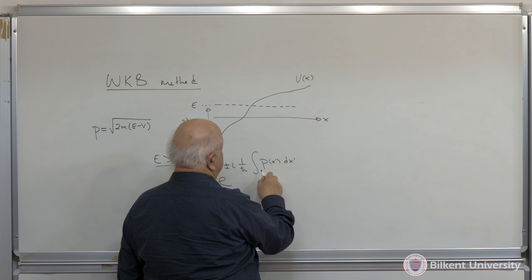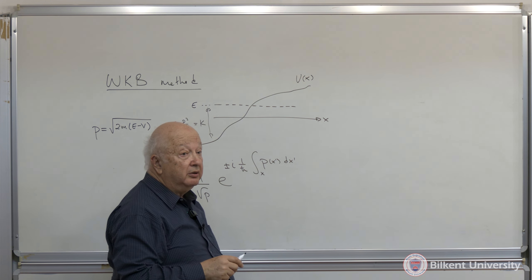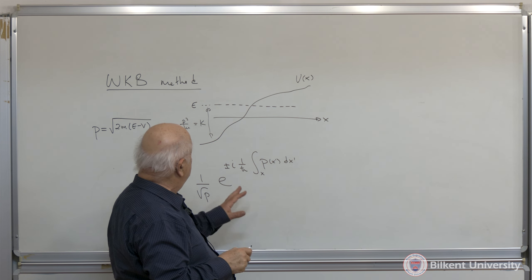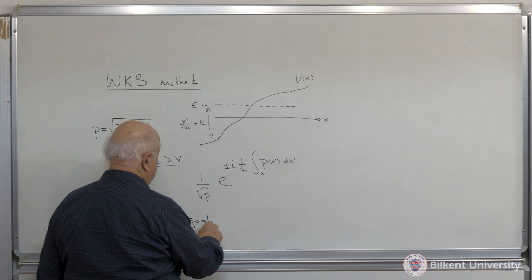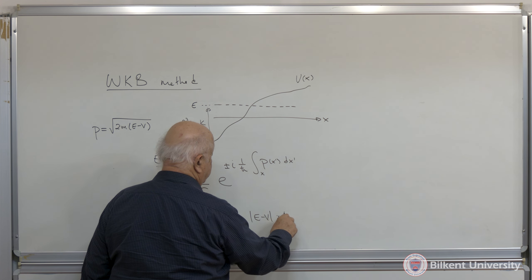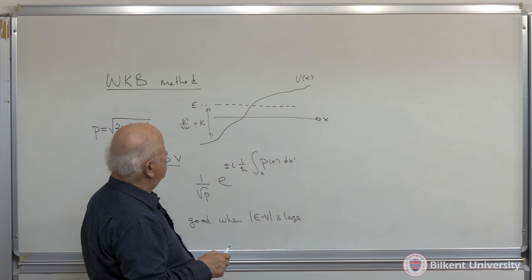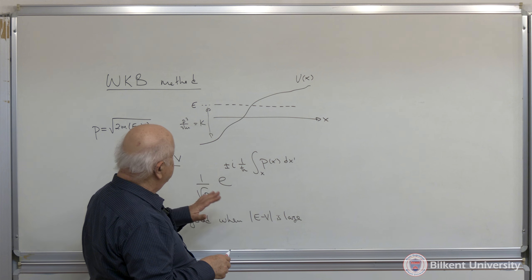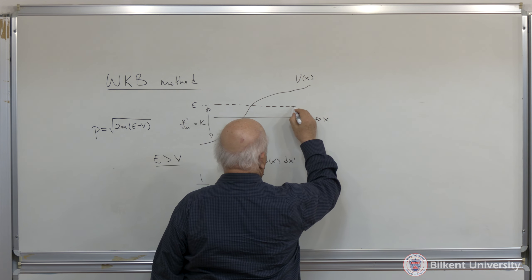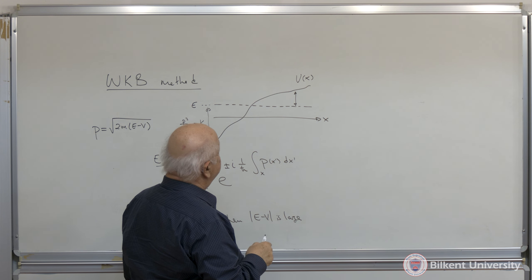We had e to the plus or minus i times 1 over h-bar times the integral of P of x-prime dx-prime, because V is changing as a function of x. I integrate from some point to x. This is good when the magnitude of E minus V is large, or in some sense the momentum is large.